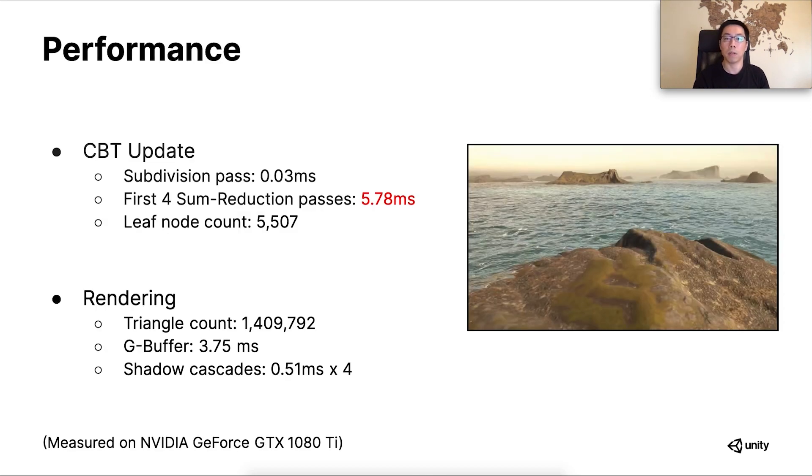With such huge amount of subdivision data, the performance soon became the number one focus in our implementation. Please notice that we've only done our profiling on PC environment as we are in early prototyping stage. The subdivision pass is pretty fast because we don't need a lot of leaf nodes to get to a satisfying subdivision of the terrain geometry. In the demo video, most of the time there are fewer than 10,000 leaf nodes.